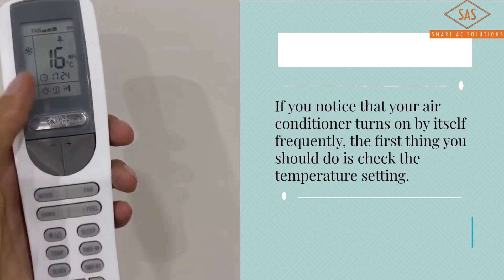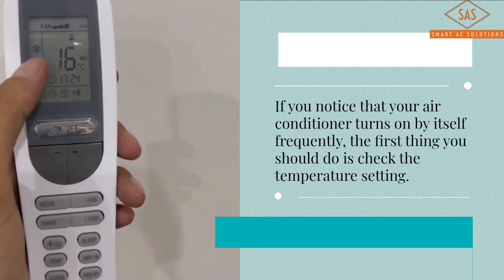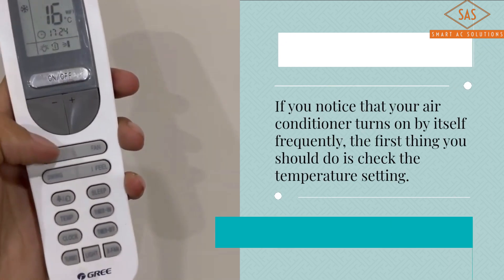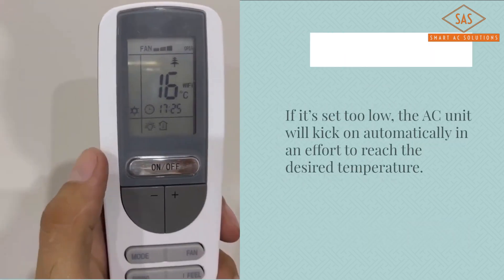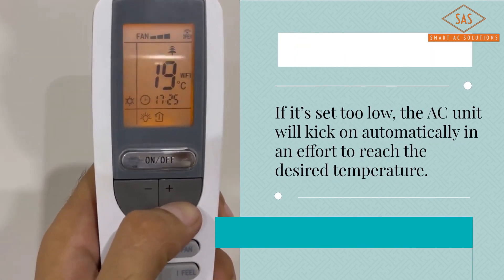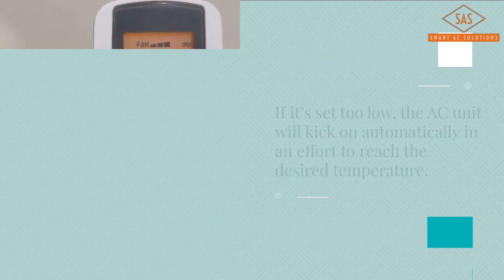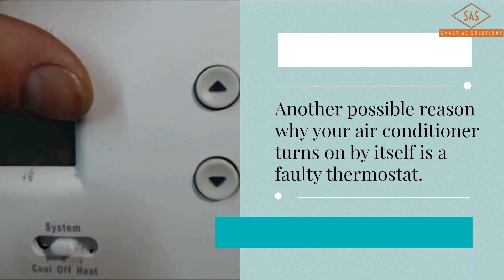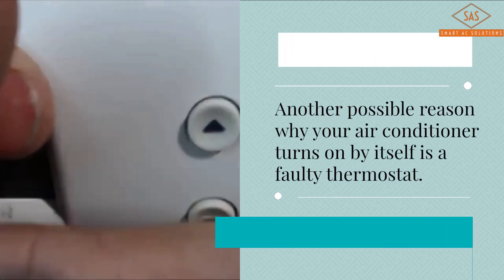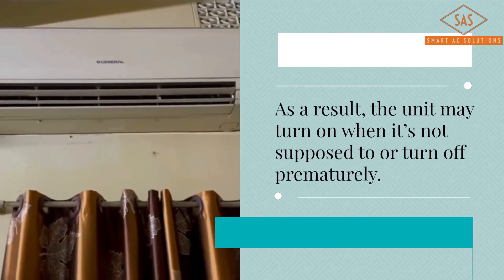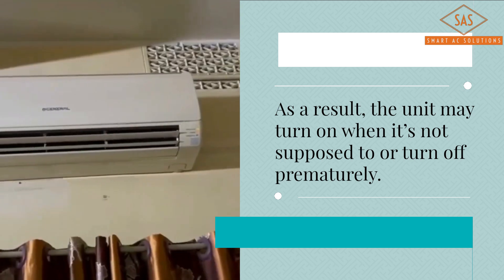If you notice that your air conditioner turns on by itself frequently, the first thing you should do is check the temperature setting. If it's set too low, the AC unit will kick on automatically in an effort to reach the desired temperature. Another possible reason why your air conditioner turns on by itself is a faulty thermostat. As a result, the unit may turn on when it's not supposed to or turn off prematurely.